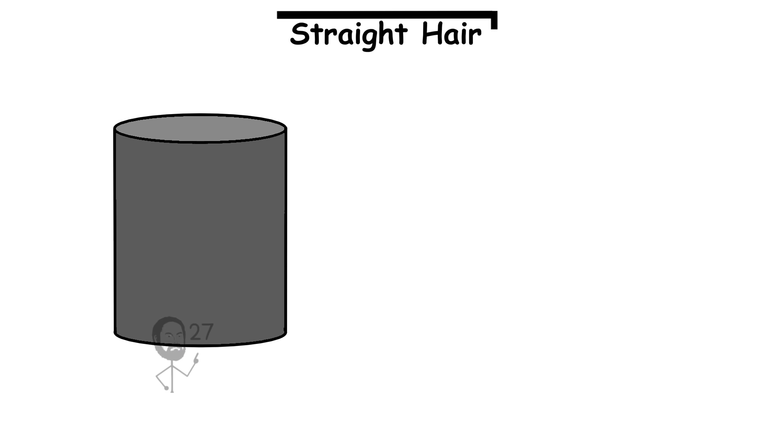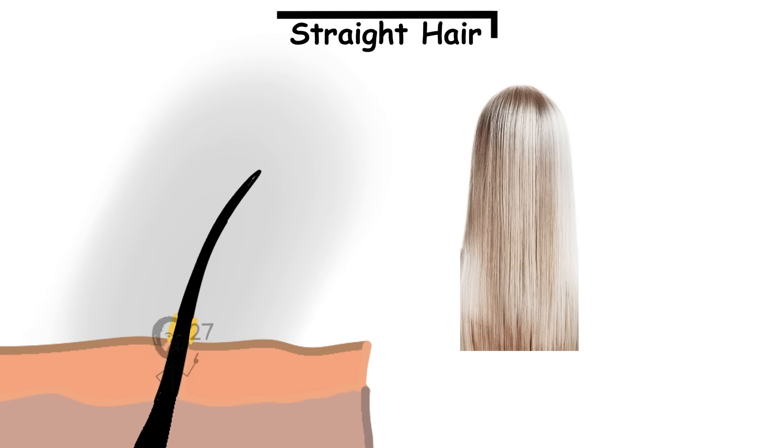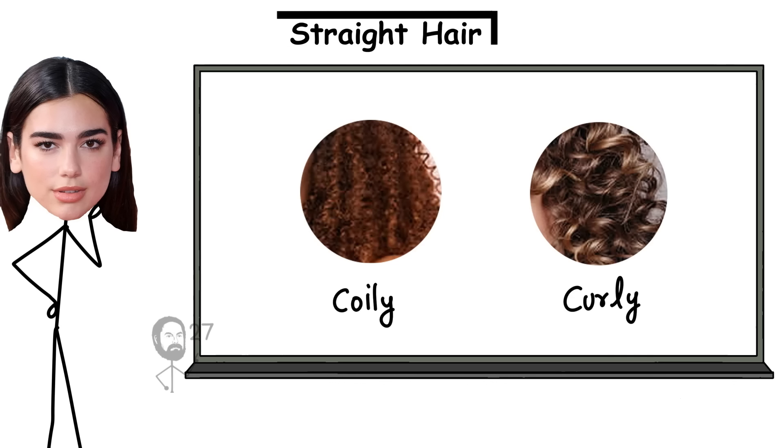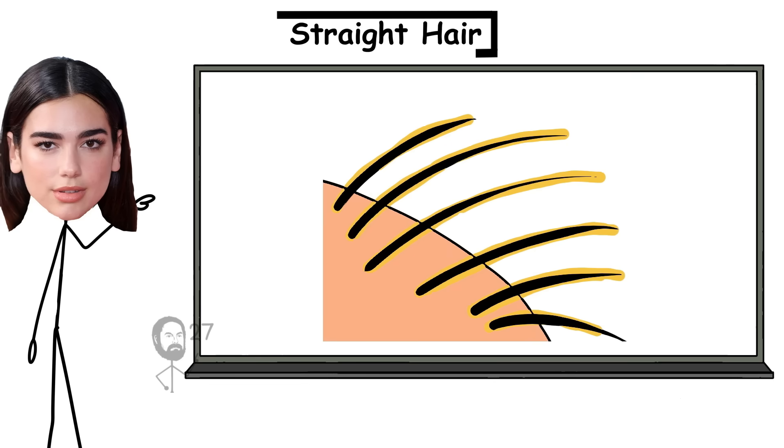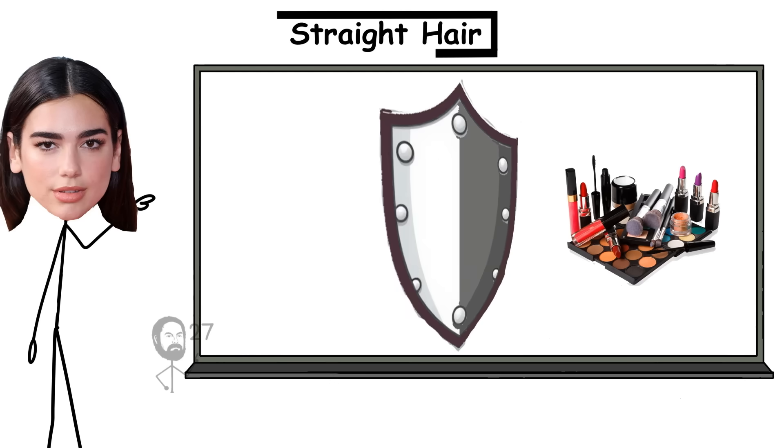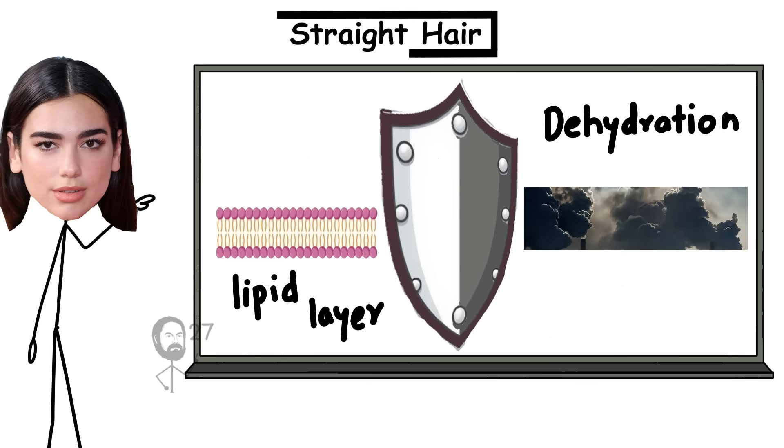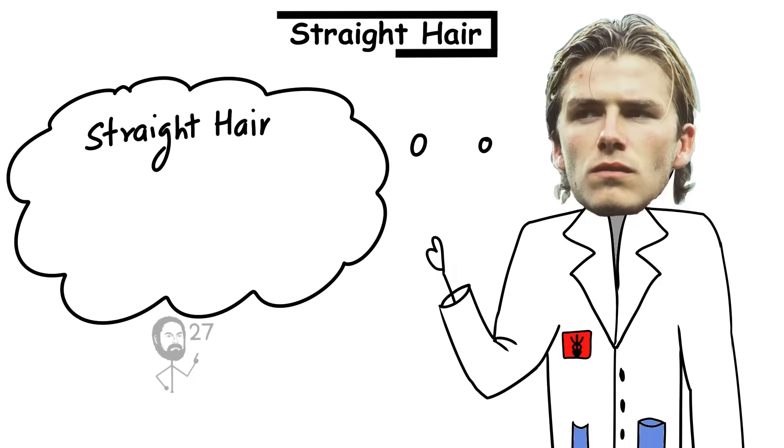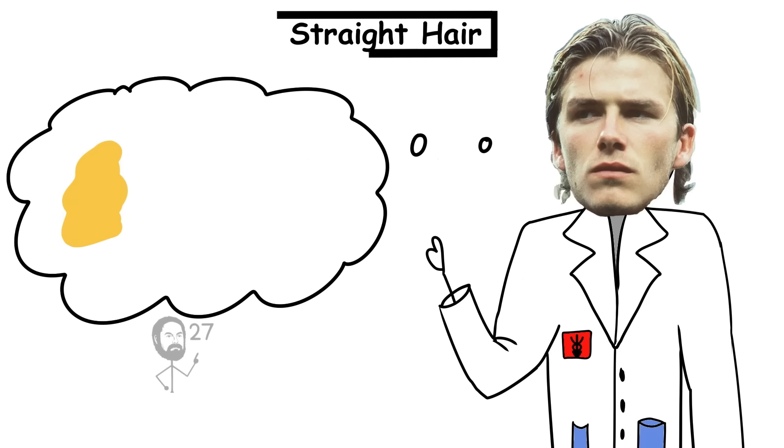The cylindrical structure of straight hair also allows natural scalp oils, or sebum, to flow freely from the roots down the shaft. Unlike curly or coily hair, which slows or blocks this movement, straight hair becomes evenly coated, giving it a shiny, smooth appearance. But that shine isn't just cosmetic—it's a sign of a protective lipid layer that guards against dehydration, environmental pollutants, and UV damage. In effect, straight hair is self-conditioning, using its shape to distribute built-in protection efficiently.